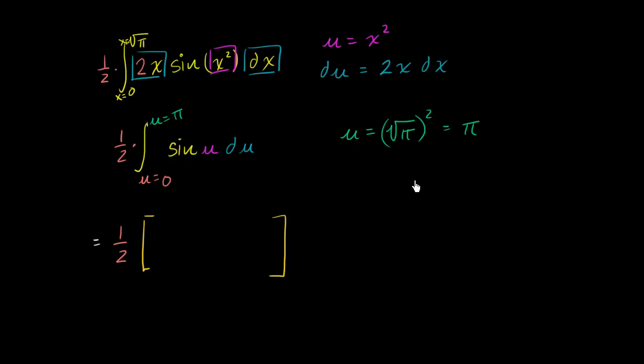Well, the derivative of cosine of u, let me write it over here, d/du cosine of u is equal to negative sine of u. So the derivative of negative cosine of u is equal to sine of u.